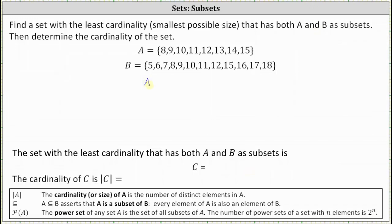A is a subset of C and B is a subset of C, which means every element of A must be in C and every element of B must be in C. Since we're looking for the set with the least cardinality,